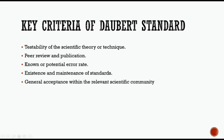The criteria set by the Supreme Court were: first, the empirical testability of a particular scientific theory or technique; second, the study or theory should be peer reviewed or published; third, the acceptance of known or potential rate of error of the theory or technique and existence and maintenance of standards; and fourth — same as the Frye standard — general acceptance of the theory or technique in a scientific community.